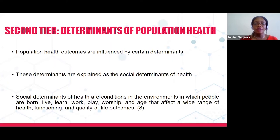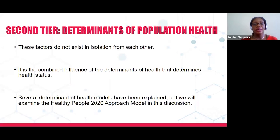The second tier in the definition of population health looks at the determinants of health, often called the social determinants of health. It is defined as the environment in which people are born, live, work, and play — and this environment can affect a wide range of health functioning and quality of life outcomes. The social determinants of health do not exist in isolation; their combined influence determines health status. For this discussion, we'll be looking at the CDC Healthy People 2020 approach model.